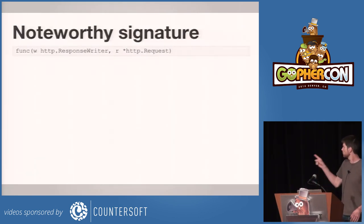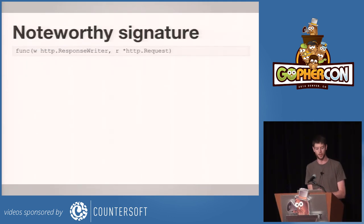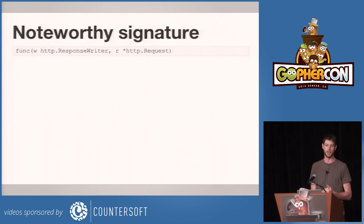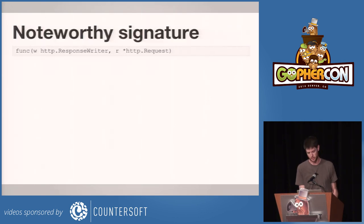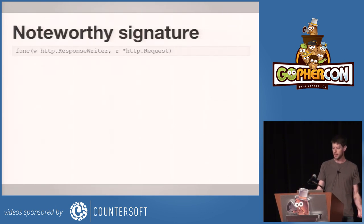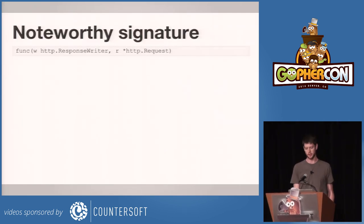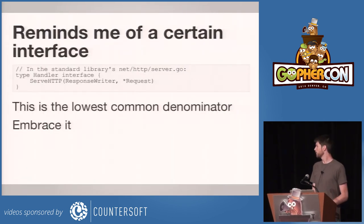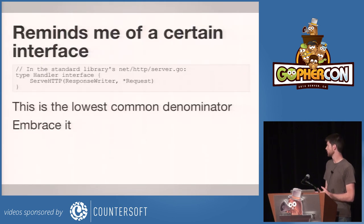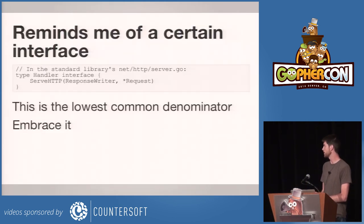I want to focus in on this one function signature: the response writer and request pointer. It's a destination and source kind of thing, which you see all over the place in io.Copy. And by itself it doesn't look terribly special, and when it's in a function literal it really doesn't look special. But if you put it in an interface, it starts to take on a little more meaning. This is the handler interface from the standard library, from the HTTP package.